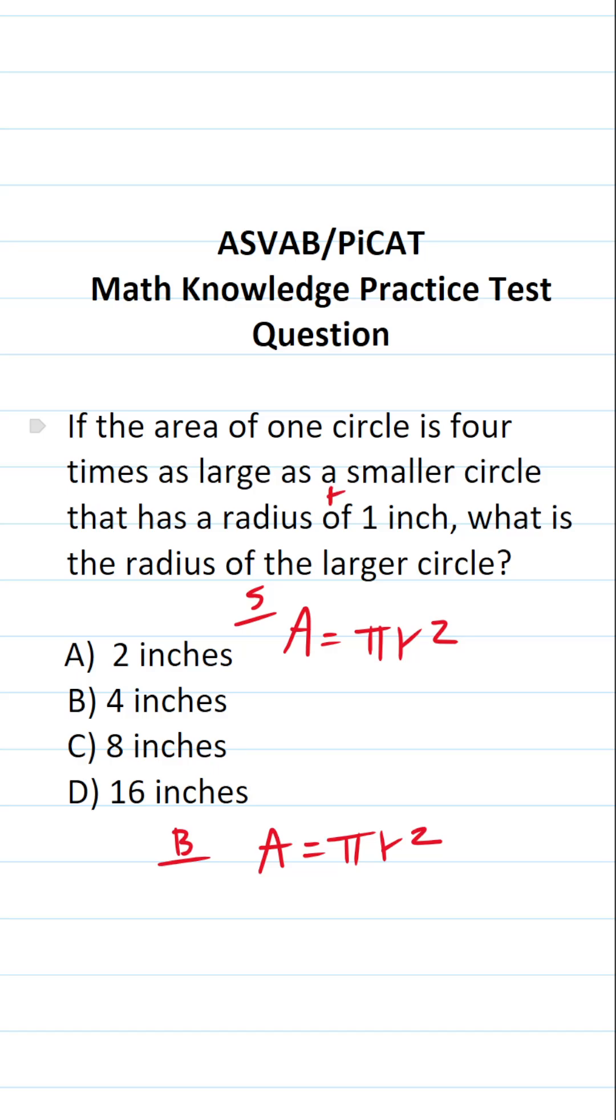We know its radius is one inch, so its area is going to be π times 1². One squared is the same thing as 1 times 1, which is 1, so its area is going to be just π.